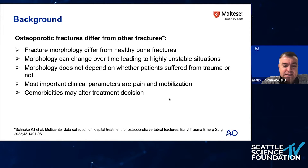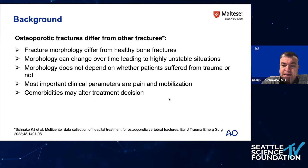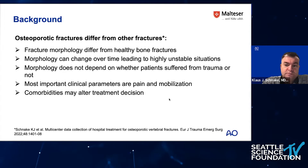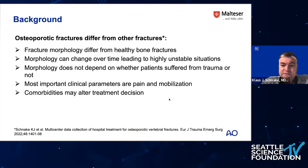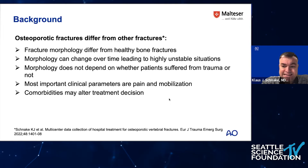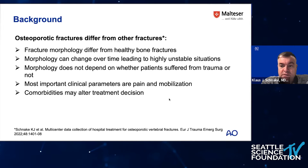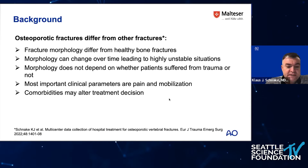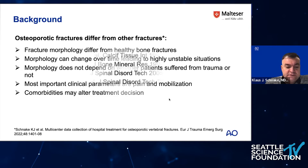The morphology does not look exactly like fractures in younger patients, and it can change over time, sometimes leading to highly unstable situations. By just looking at images, you cannot distinguish whether the patient had a trauma or not. Therefore, it's meaningful to have a classification that works for both the classical insufficiency fracture without trauma and fractures with some minor trauma where patients have osteoporosis. The most important clinical parameters are pain and mobilization, and comorbidity, sarcopenia, and frailty will alter our treatment decisions.